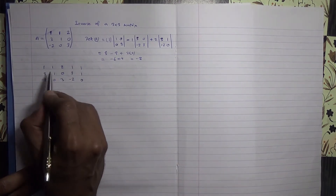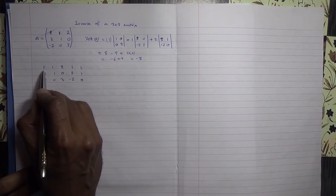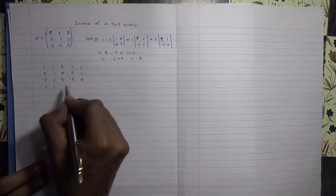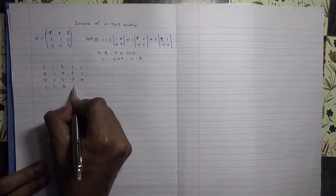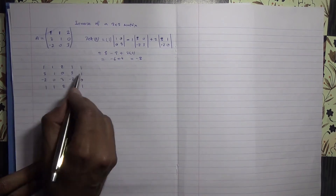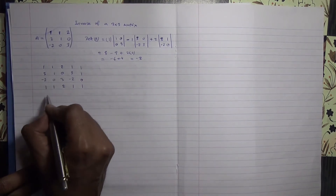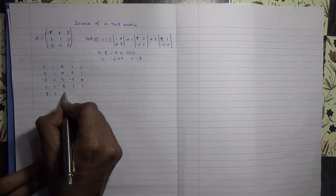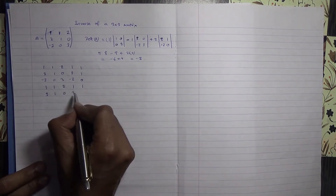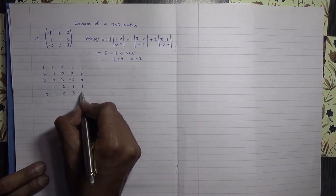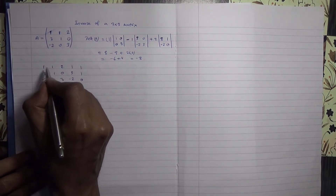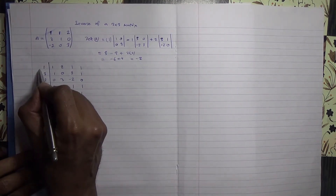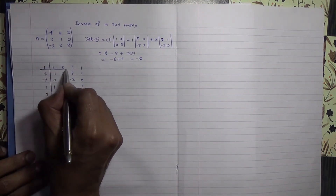And then you take the row here: 1, 1, 2, 1, 1. The second row: 3, 1, 0, 3, 1, 1, 0, 3, 1. And then you border this off, and here, and there.